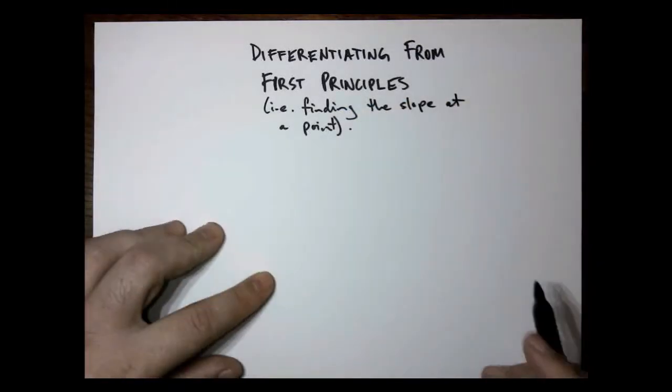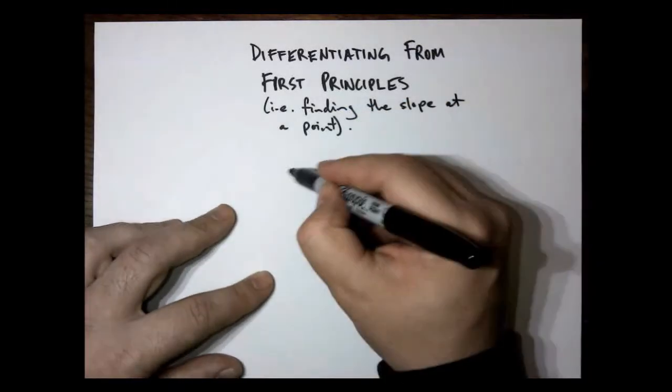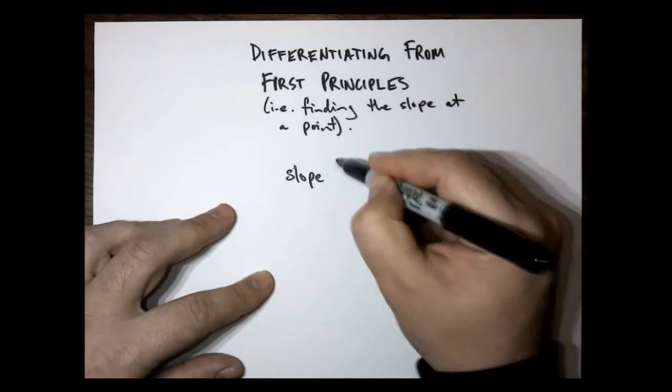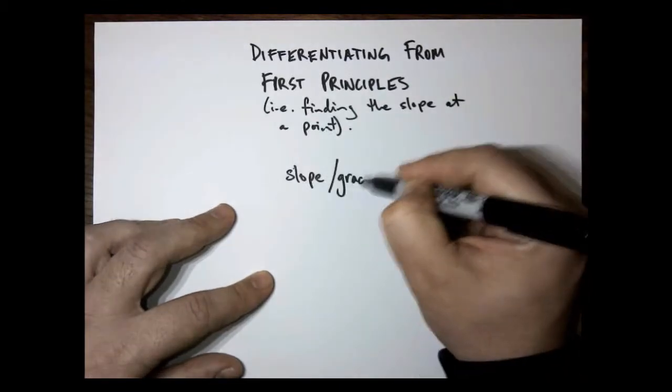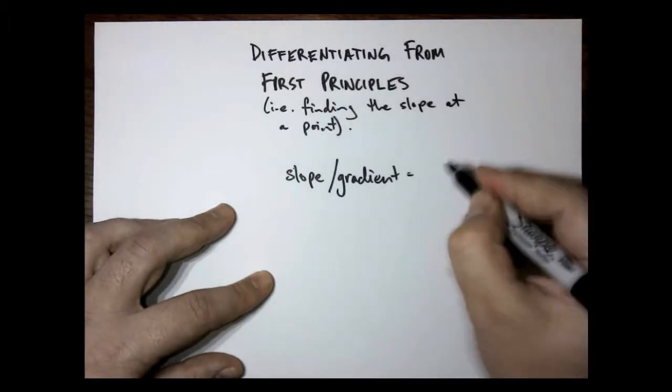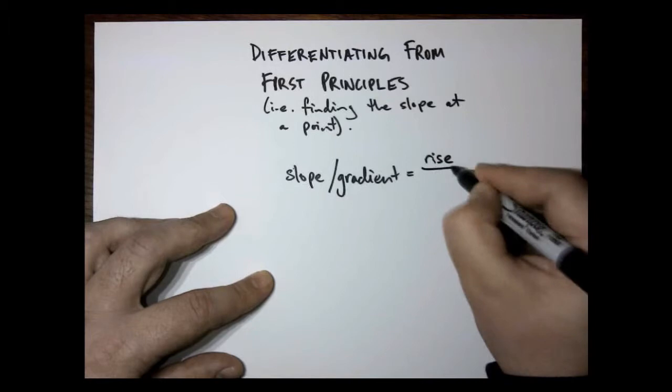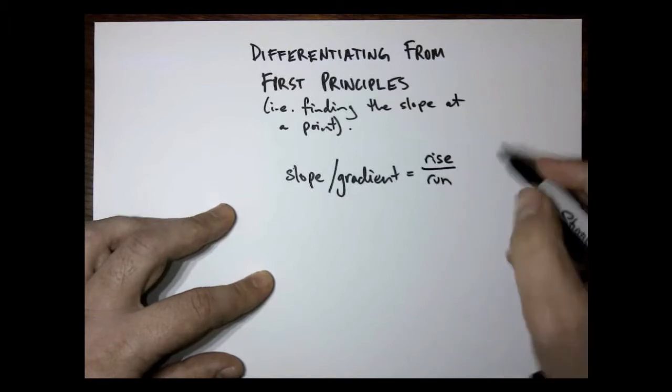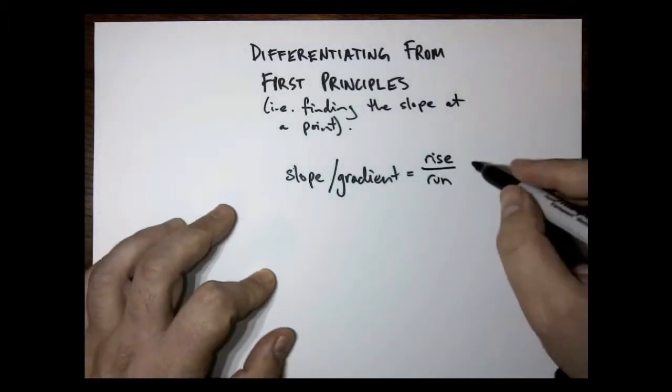So, to start with, we need to remember that slope, otherwise known as gradient, we've kind of defined as rise over run. That's just the accepted way to measure it.